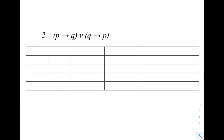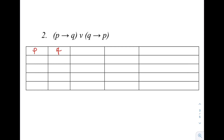Example number 2. Here we have two statements, P and Q. Following the same procedure: for P we have true, true, false, false. For Q we have true, false, true, false. That is always our standard pattern for making the first two columns.